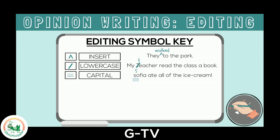Next is the editing symbol for punctuation. It is a circle with the punctuation mark that is needed inside. Punctuation can be a period, exclamation point, and question mark. You will use this symbol when you need to add punctuation or if you need to change the type of punctuation. For example: 'I went kayaking in the river' — this sentence is missing a period at the end, so I draw a circle and write a period inside.